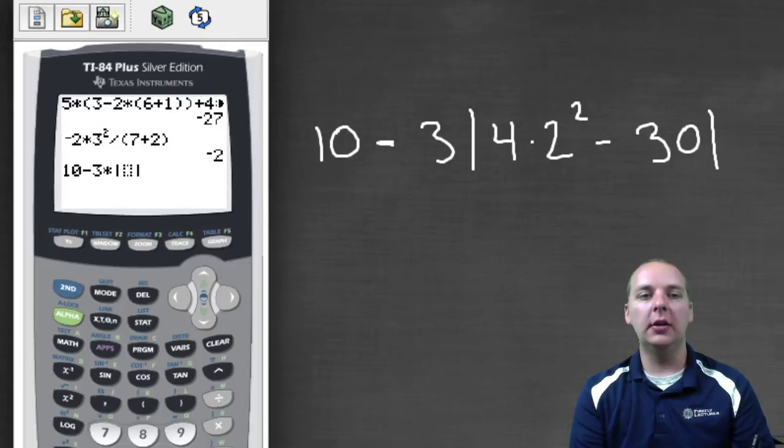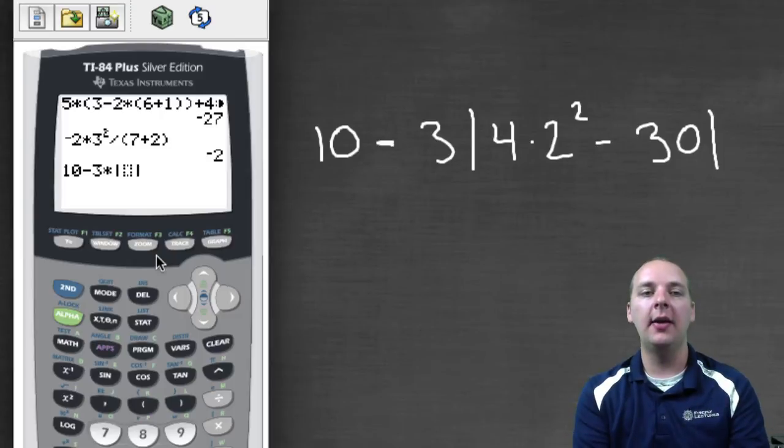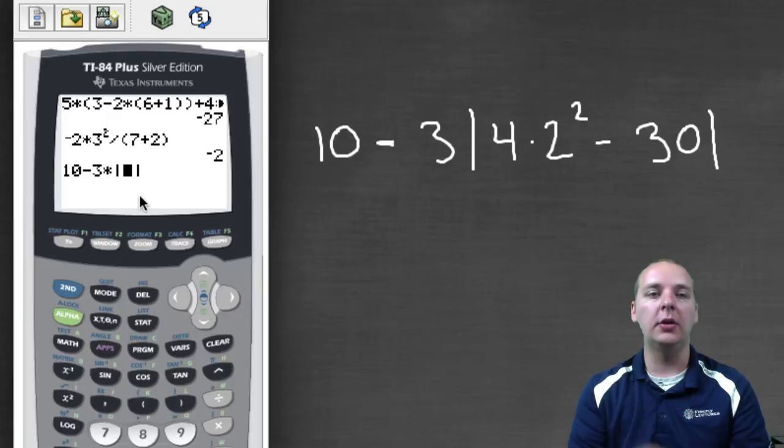And ABS stands for absolute value. So even though you're not going to see the bars on older calculators, if you have an old TI-83 or something like that, on some of the newer calculators, they'll actually show you the bars.